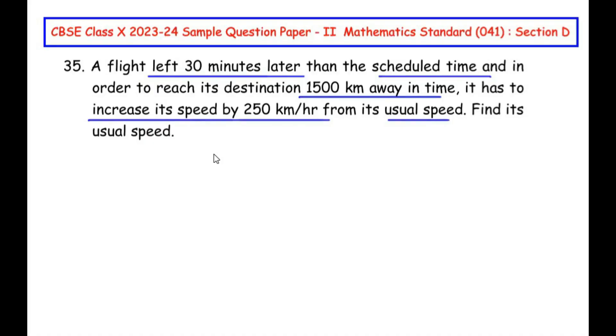So let us try to understand the question first. A flight was scheduled to be flying at a particular time, and it got late by 30 minutes. So to compensate those 30 minutes of loss, it increases its speed by 250 kilometers per hour than its usual speed. For example, if it was moving with a speed of 500 kilometers per hour, it increases it by 250, that is, it has to travel now by 750 kilometers per hour.